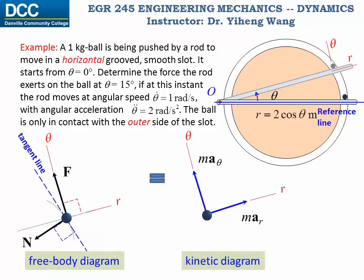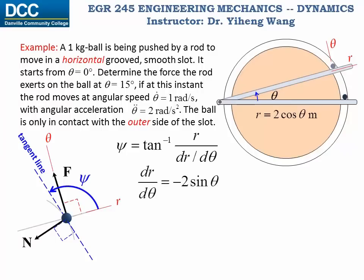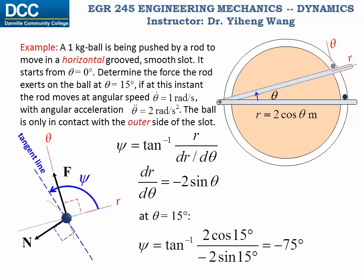Before we can write our equation of motion, we need to find out the direction of the normal force so that we can resolve it into the corresponding r and theta components. The angle psi made by the positive radial direction and the tangent line can be evaluated by this equation. Since we know the function of the path r equals two times cosine theta, dr/dθ equals negative two sine theta. At theta equals 15 degrees, psi evaluates to negative 75 degrees, which indicates a clockwise rotation of 75 degrees.